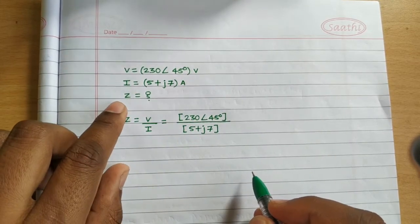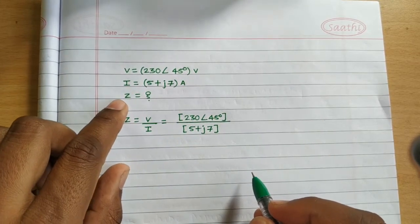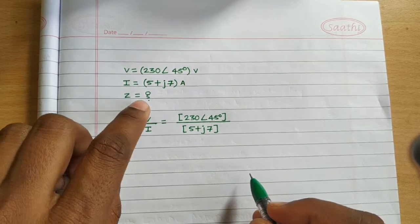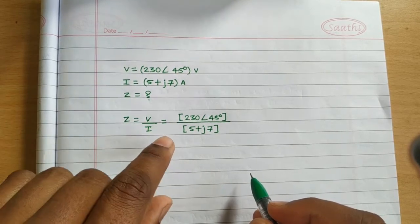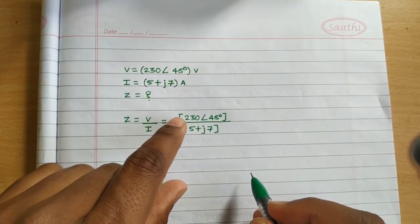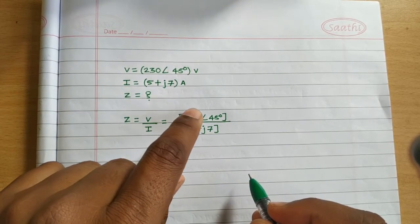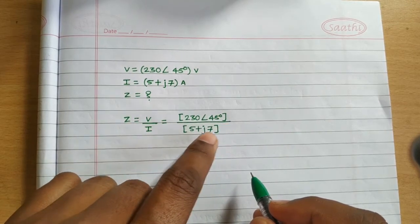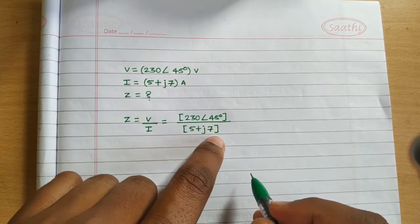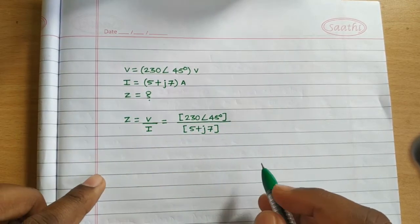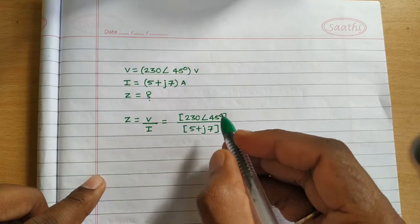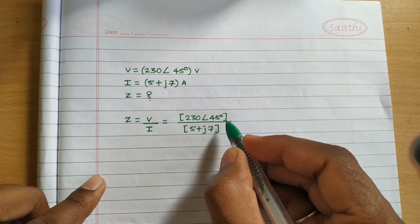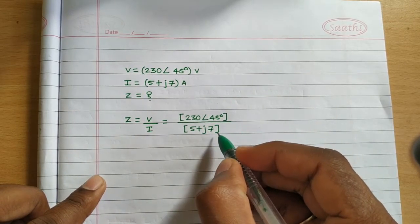Suppose you have to find out the value of impedance. As per the formula, Z is equal to V divided by I. So what is your value? 230 volts at an angle 45 degrees, divided by 5 plus j7. Here you can see that voltage is given in polar form and current is given in rectangular form.